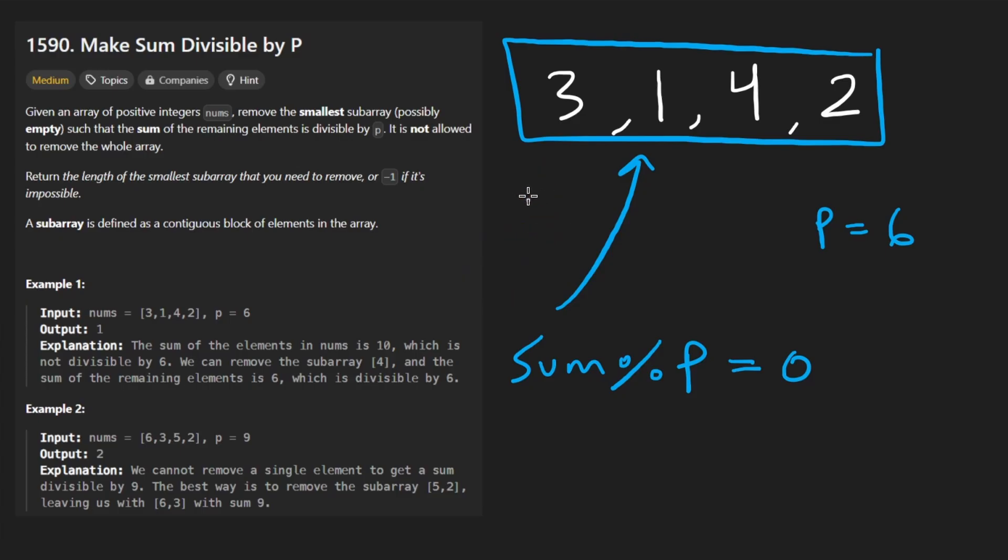But when we remove elements, we do so contiguously. You can't take multiple separate elements that aren't connected. We can only take one contiguous subarray from the input and remove it. We would of course take the remainder, see if it's divisible by P, and we want to remove the smallest possible subarray from the input.